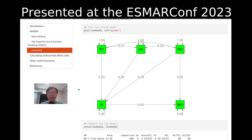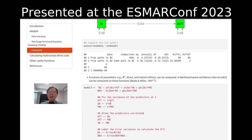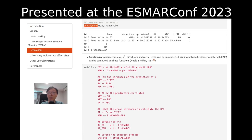Finally, we can ask whether this constrained model is statistically different from a model without constraints. Since these two models are nested, we can use the ANOVA function to compare them. In this example, the chi-square difference test is about 35 with df of 2 and a very small p-value, suggesting that we should not impose equal constraints on these three paths.